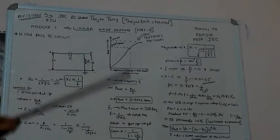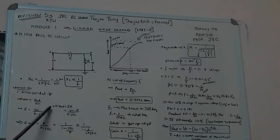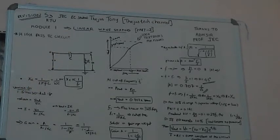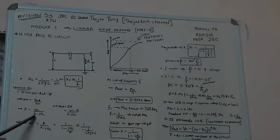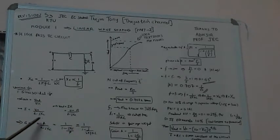We know that output is taken across the resistance. So V out is equal to I into R. From that, V out is equal to V in divided by (R minus jXC), into R. Now, K is V out by V in. Output voltage divided by input voltage V in. We will get K is equal to R divided by (R minus jXC).